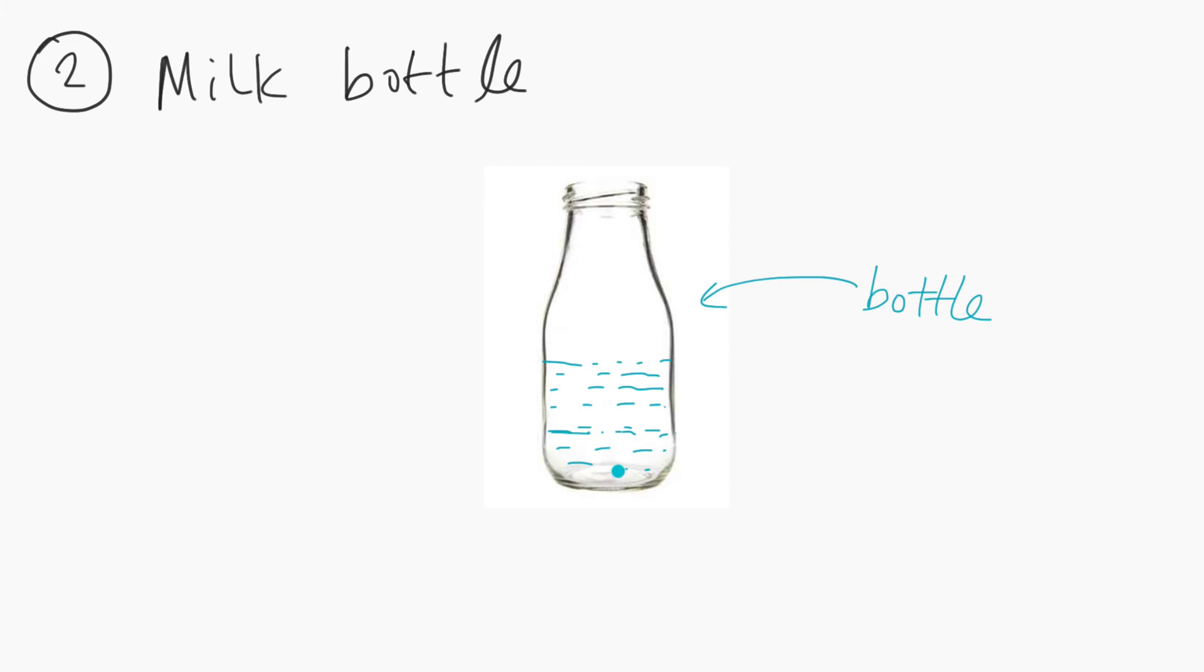And this milk bottle's name is, let's call it bottle for now, right? Bottle. And it has changing values, or changing values within it. So this bottle is a variable with changing values. The name of this variable is bottle, and it has changing values. Hopefully that makes sense. It's pretty straightforward.